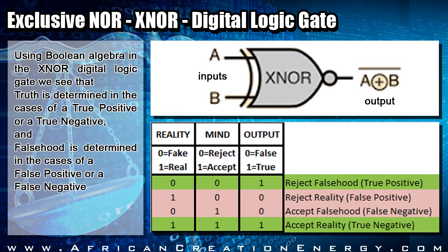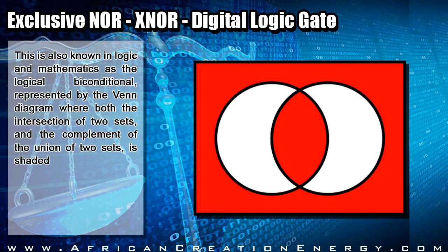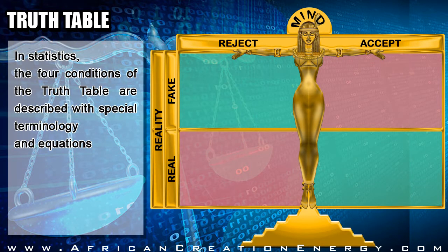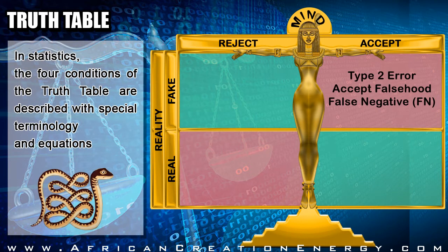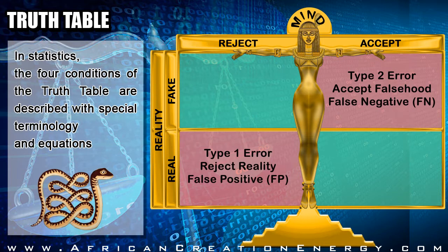From the boolean algebra we can see that truth is determined in the cases of a true positive or a true negative, and falsehood is determined in the cases of a false positive or a false negative. This is also known in logic and mathematics as logical biconditional, represented by the Venn diagram where both the intersection of the two sets and the complement of the union of the two sets are shaded. In statistics, the four conditions of the truth table are described with special terminology: a type 2 error refers to a false negative — accepting something that is actually fake; a type 1 error refers to a false positive — rejecting something that is actually true.